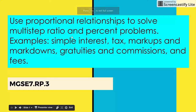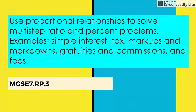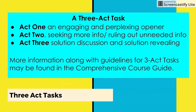In 7th grade standard RP3, students will take what they learned in 6th grade with unit rates and take it to the next step, using proportional relationships to solve problems involving items like simple interest, tax, markups, tips, commissions, fees, and that sort of thing. For us, the three-act task is how we begin our teaching of RP3.